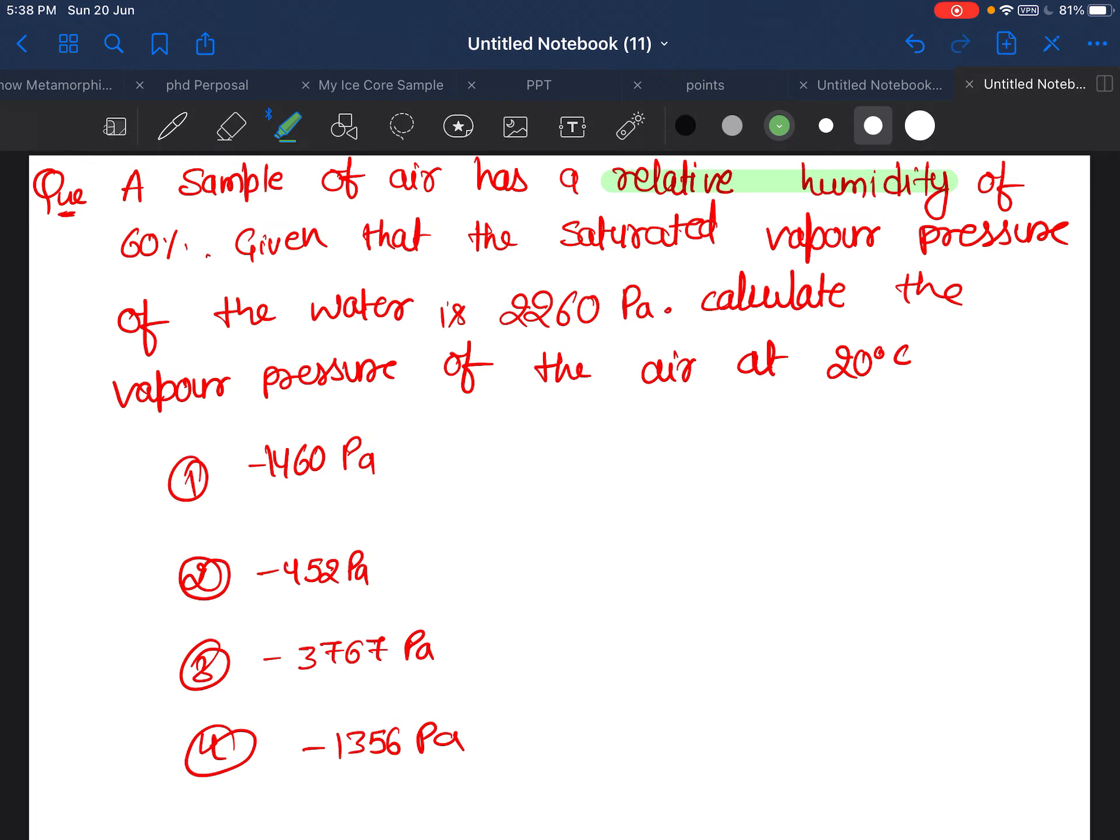In simple language, in layman's terms, suppose a parcel is here. Suppose it is having 20 grams of vapor, but it can hold up to 100 grams. So 20 by 100 is your relative humidity—how much it has by how much it can hold at that temperature. It is always measured in percentage, so we can multiply by 100.